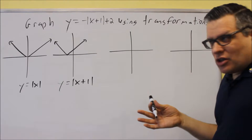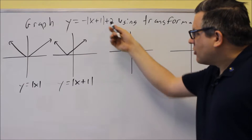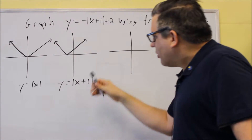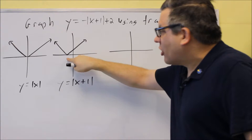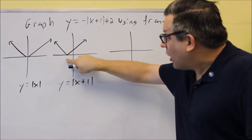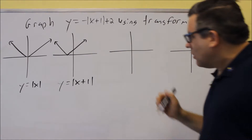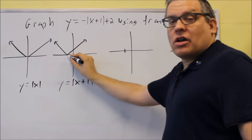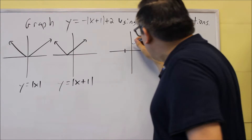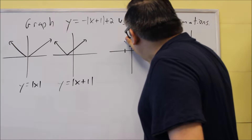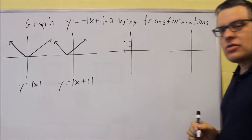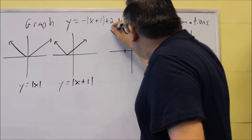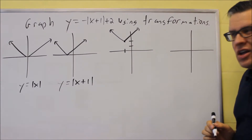Now let's take care of the outside one. Because of the plus 2 that's there, you're going to take this current graph and move it — the graph that's already been shifted to the left — up 2 units. That means the point that was originally at negative 1, 0 is going to be shifted up 2 units. So the graph is going to end up looking like this.